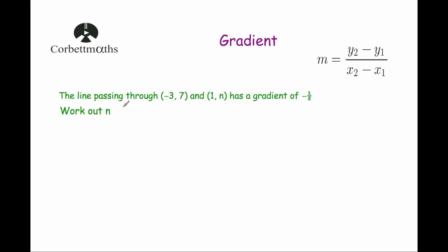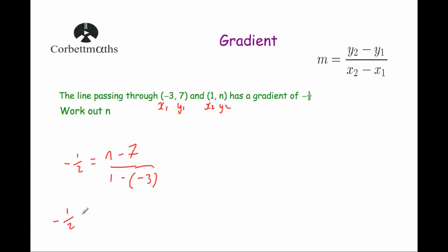Our next question says: the line passing through the points (−3, 7) and (1, n) has a gradient of −1/2. Work out the value of n. Here we've been given the gradient and need to find n. Labelling the coordinates x1, y1 and x2, y2, we get −1/2 equals n minus 7 over 1 minus (−3), which simplifies to n minus 7 over 4. Multiplying both sides by 4 gives −2 equals n minus 7. Adding 7 to both sides gives n equals 5.